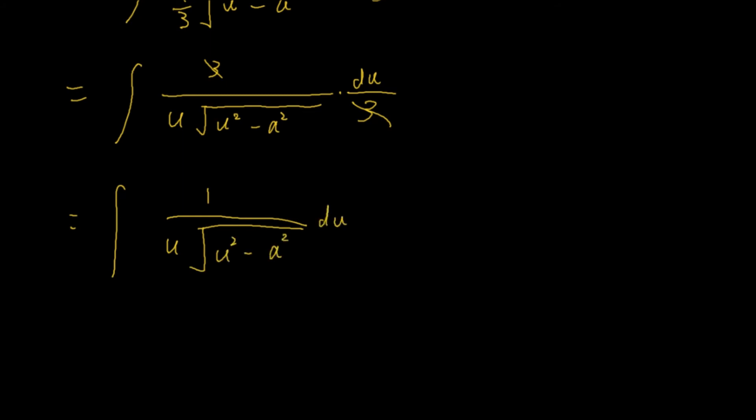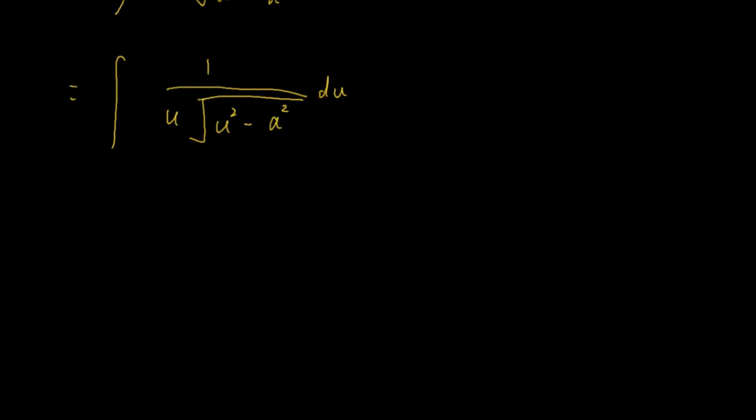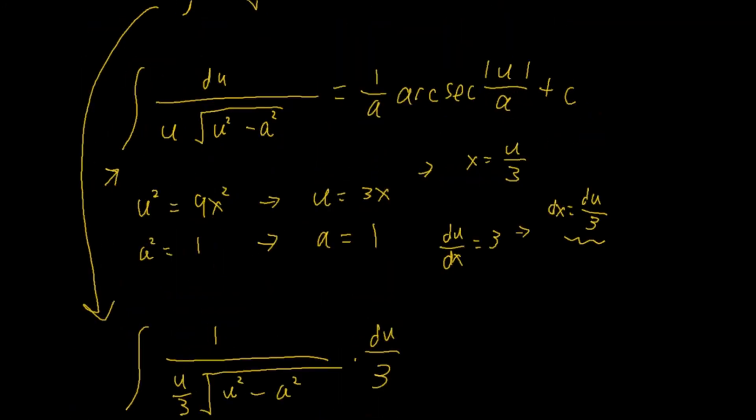Now, let's multiply the 1 by du. So, we can write this as du over u, times u squared minus a squared, and a squared is just 1, so we can write this as 1. This now is exactly the same as this form. So, we can write this formula, which is the integral, 1 over a arc secant absolute value of u over a plus c.